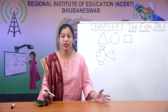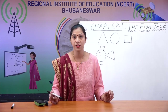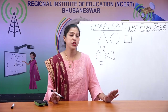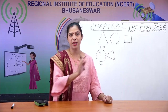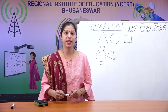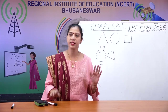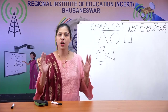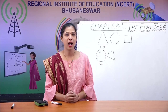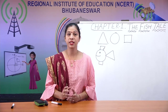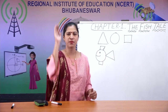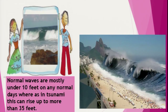Now let's talk about the sea, because when we started, I said we will go on a voyage. For a voyage, we need an ocean or sea. In the sea or ocean, you must have seen big waves. On a very normal sunny day, the normal waves are mostly under 10 feet. But when there is a tsunami — an earthquake under the sea — big waves come and create a lot of destruction near the shore.